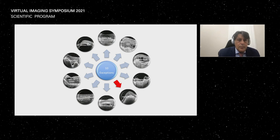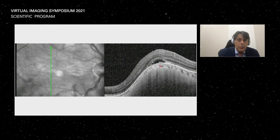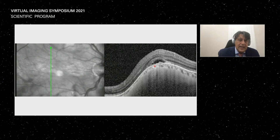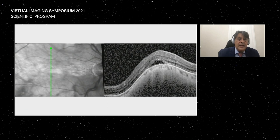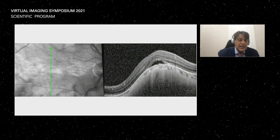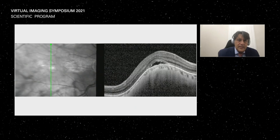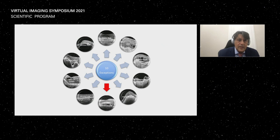The fourth condition is dome-shaped maculopathy. In dome-shaped maculopathy, we frequently have some hyporeflective fluid on the top of the dome shape, and this does not react to anti-VEGF or PDT. We don't have any efficient treatment. It's not exudative — it's mostly a transudative lesion. It remains stable with time, not moving, always the same.